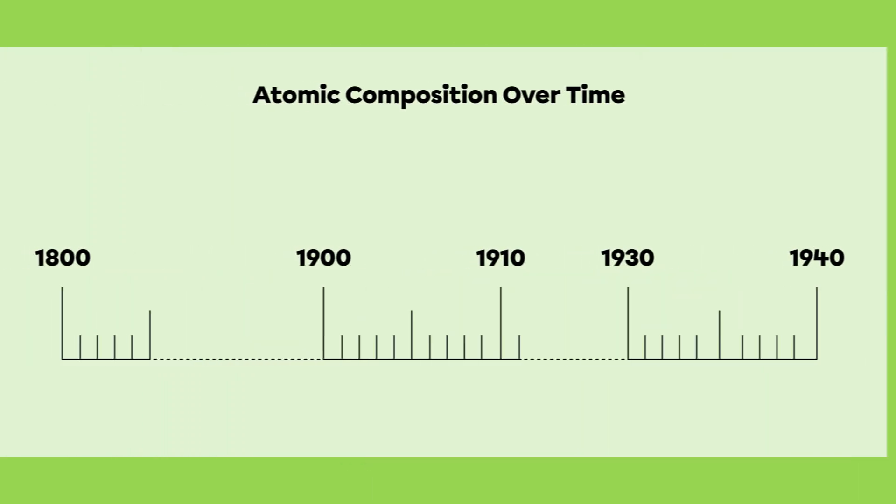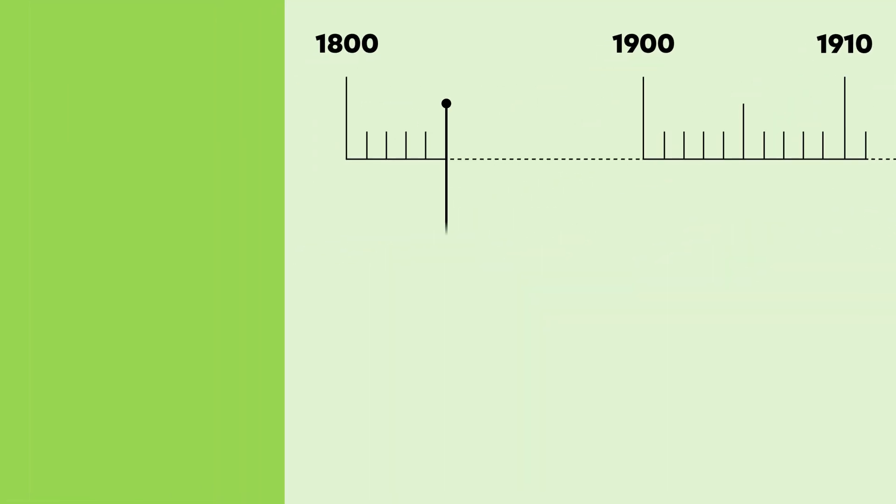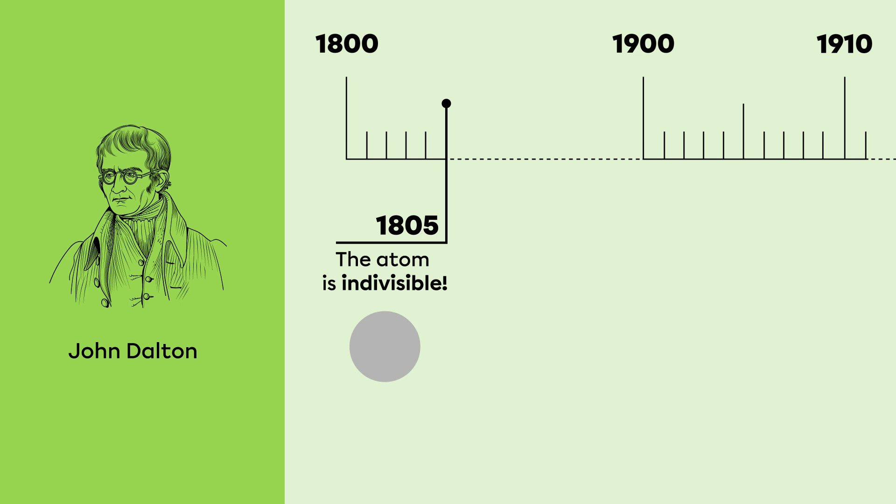Over time, the definition of what an atom is and the description of what it contains have evolved considerably. In 1805, chemist John Dalton thought an atom could not be divided.